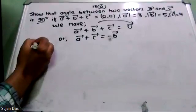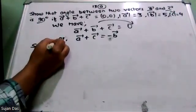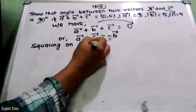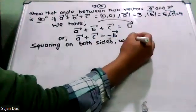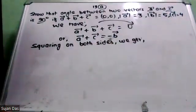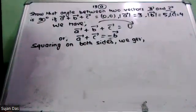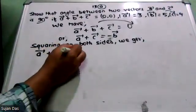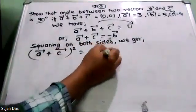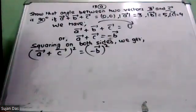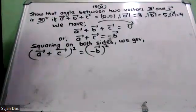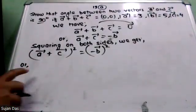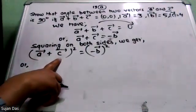Squaring on both sides. So, squaring on both sides — we use the formula: (A + B)² = A² + 2AB + B². So, (vector A + vector C)² = (−vector B)².